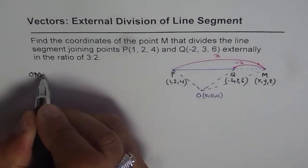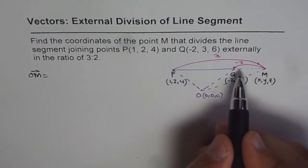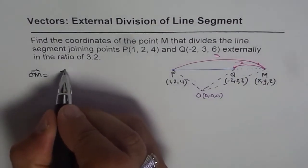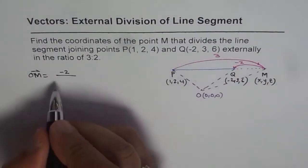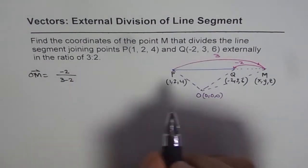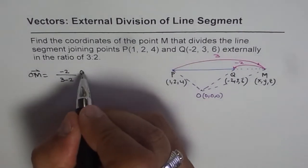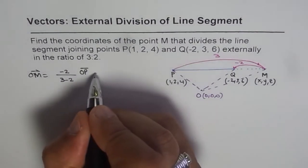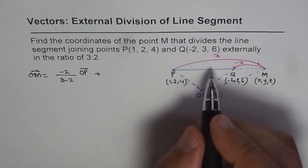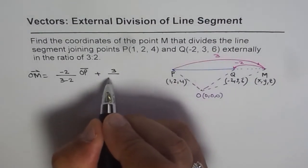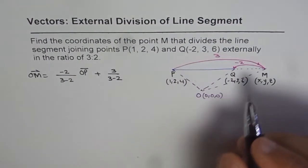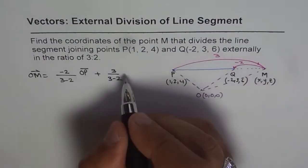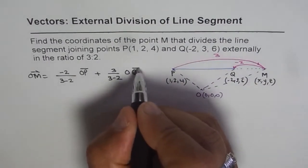OM equals (-2)/(3-2) times OP plus 3/(3-2) times OQ.